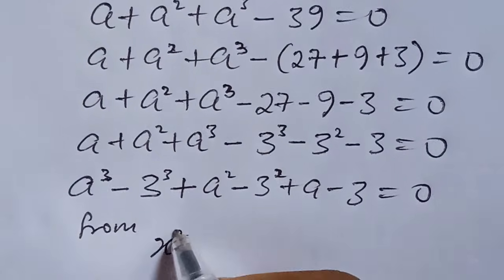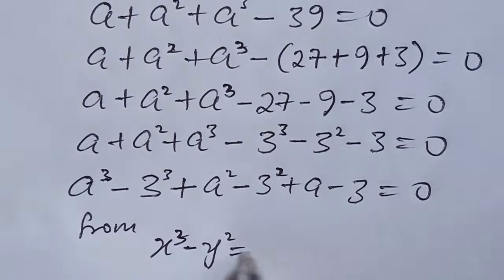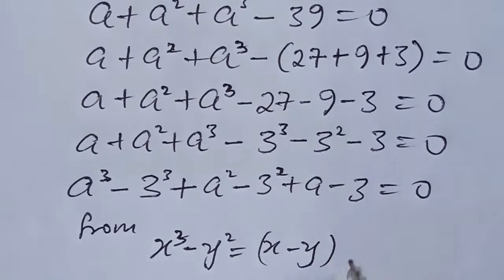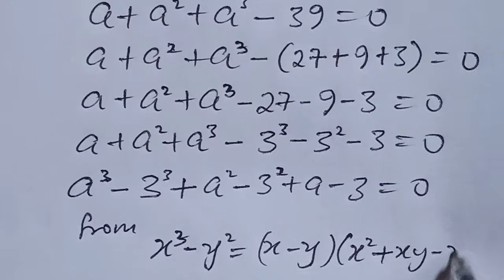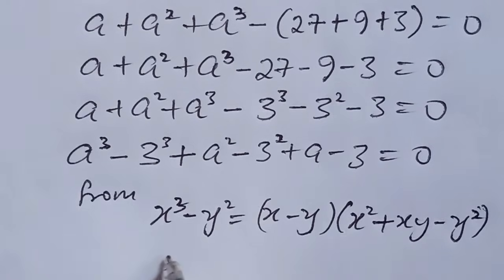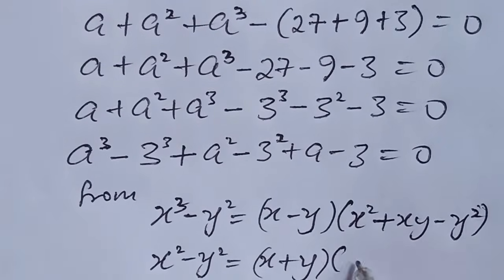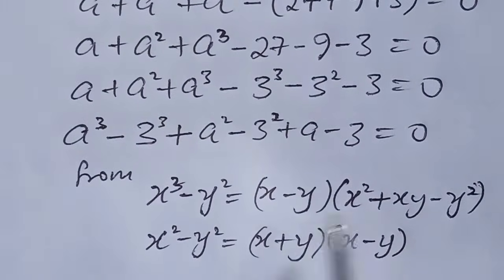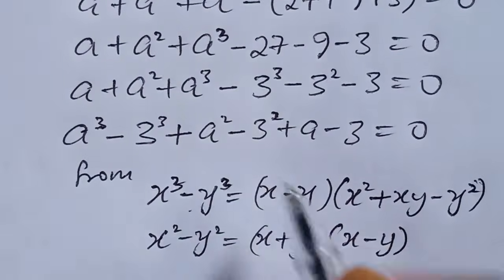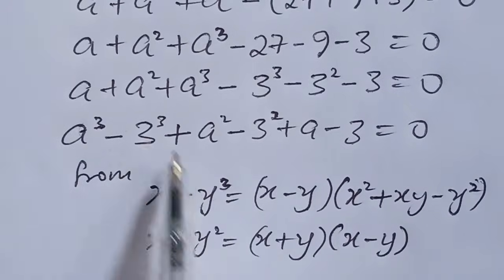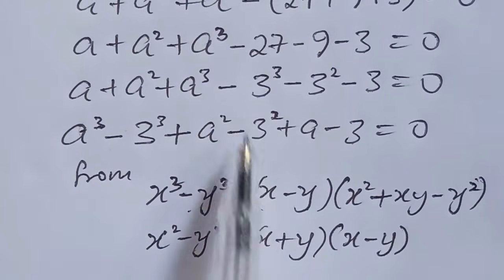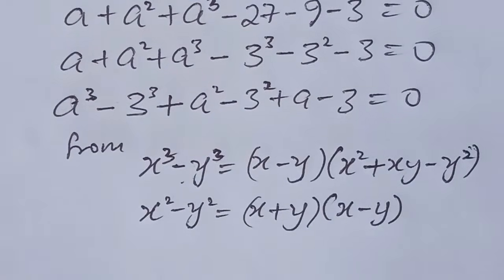Having done this, what we now need is to consider this identity. This identity implies that if we have this expression to the power of 3, we are going to expand it in this form. So we express this term in this form, and this term as well we express in this form. Then we have the next step to be considered.